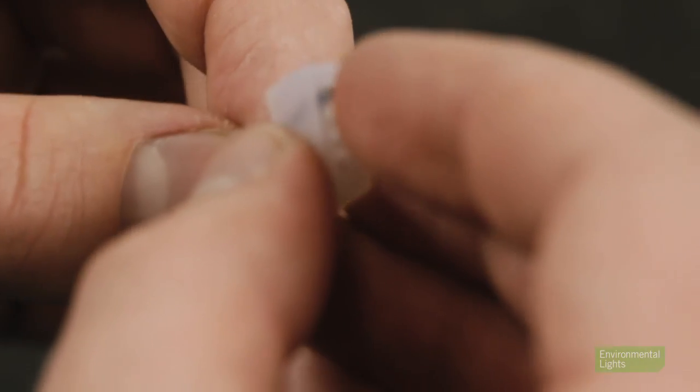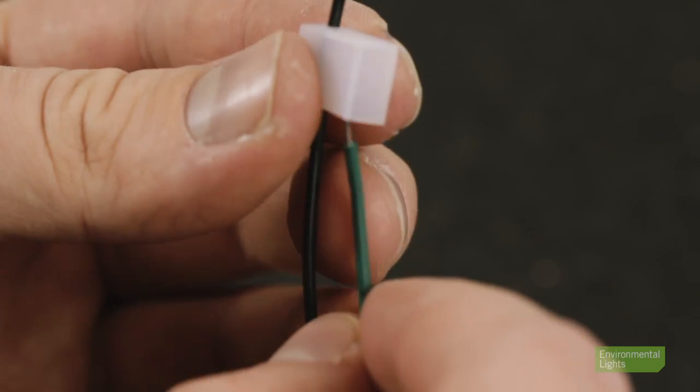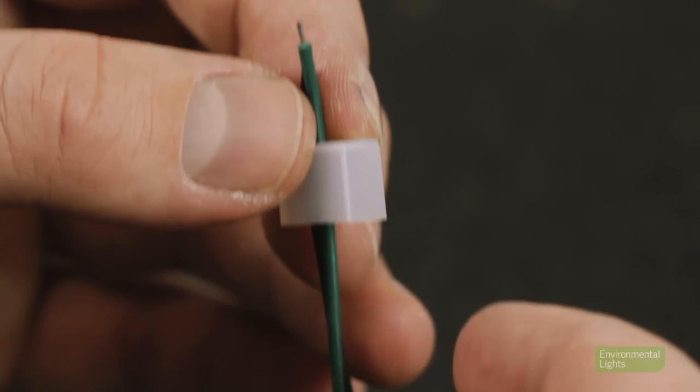If you have an RGB strip, slide a 4-hole cap onto the wires, or a 2-hole cap if you are using a monochrome strip.